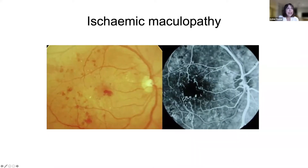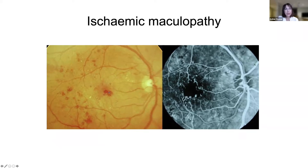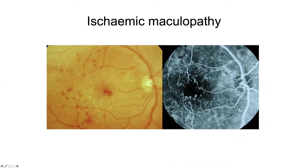Ischemic maculopathy is described clinically as a featureless macula — the retina is very flat with thinning when viewed stereoscopically. These deep blot hemorrhages are significant, implying they're deeper within the retinal layers. On fluorescein angiography we see an enlarged FAZ with dropout of retinal capillaries — this area is becoming ischemic.